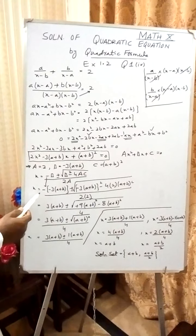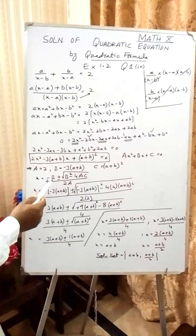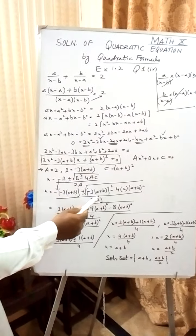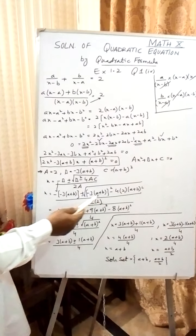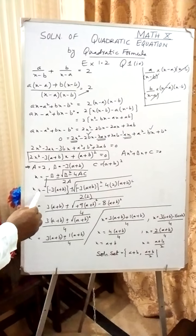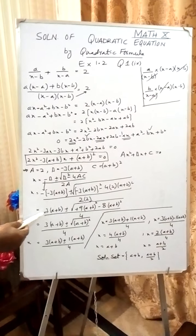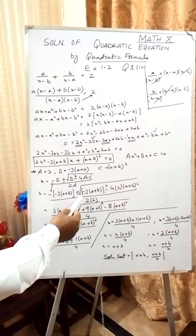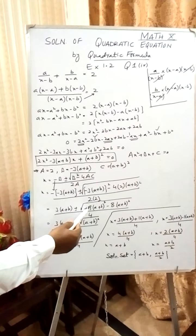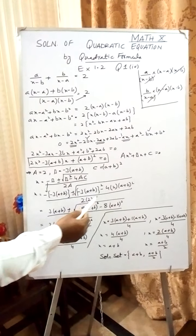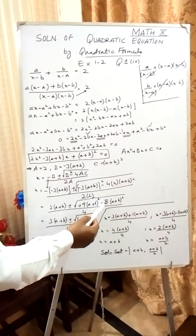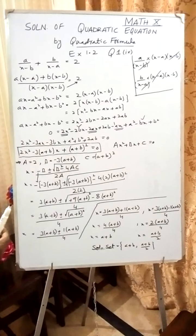Minus will come as it is, and the value of B is -3(a + b). Again, value of B with square, and 4AC, all the values will be substituted. This minus into minus will become plus, so 3(a + b). And here, look: minus 3 squared will become plus 9, and (a + b)² I have written as it is, and -4 times 2 is -8(a + b)².